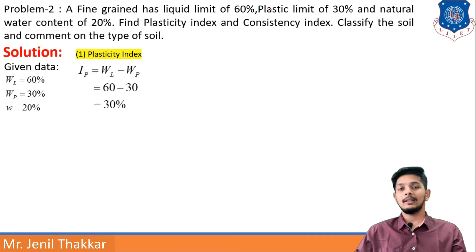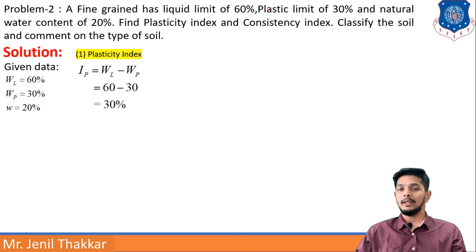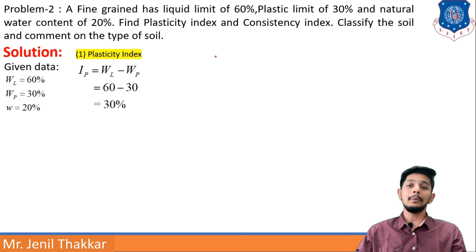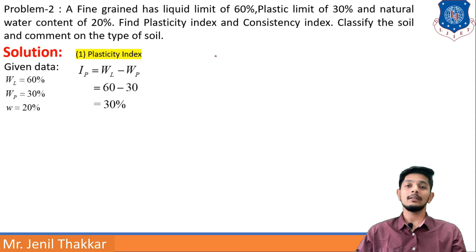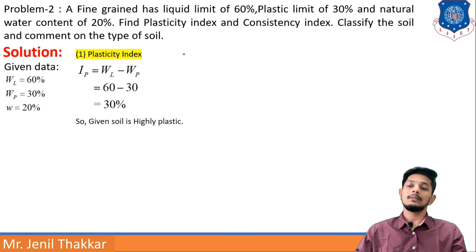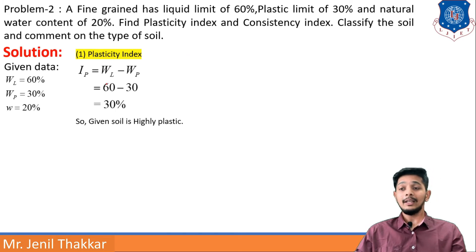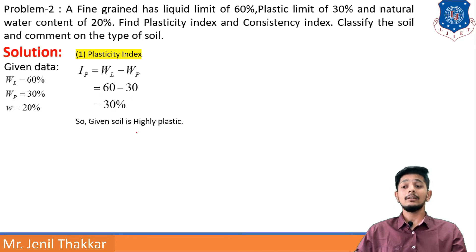First, finding plasticity index: IP = WL − WP = 60 − 30 = 30%. Since IP is 30%, the soil will be a highly plastic soil.